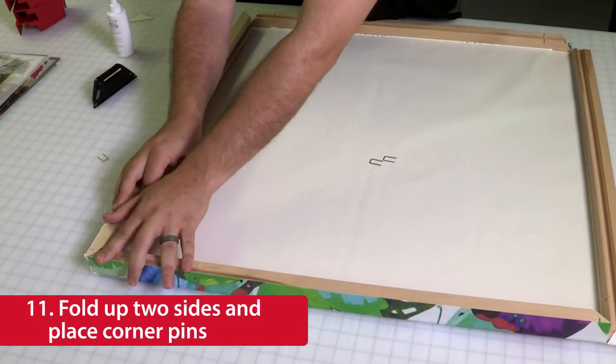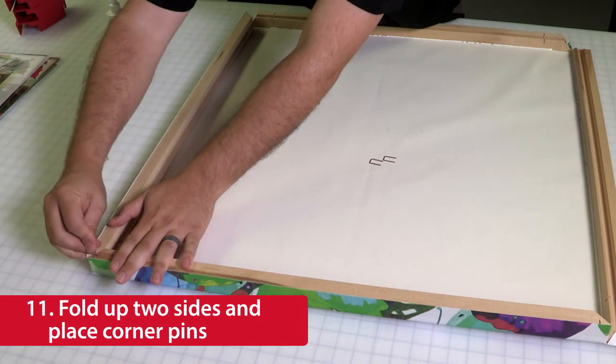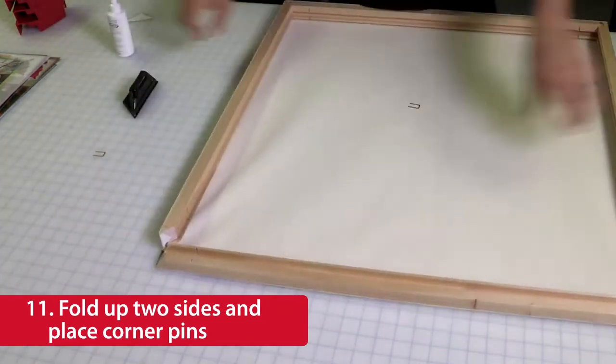Then, fold up two sides of the frame and place a corner pin into the pre-drilled holes. Repeat this process in the other three corners.